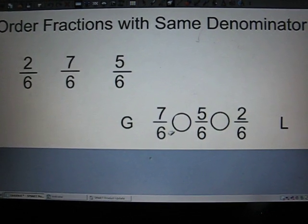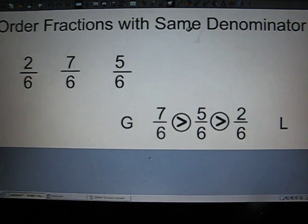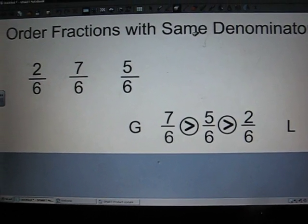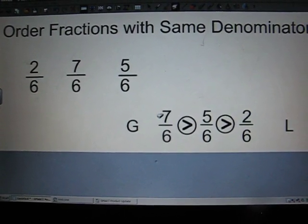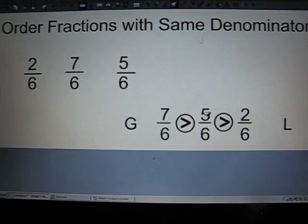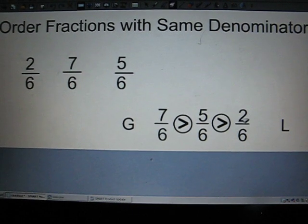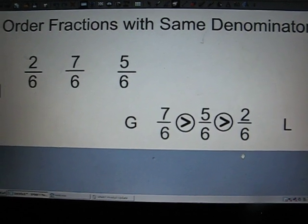I need my greater than, less than signs. Alligator eats the bigger fraction. So, 7 sixths is greatest. 7 sixths is greater than 5 sixths. And 5 sixths is greater than 2 sixths. Not too bad. Let's keep going.